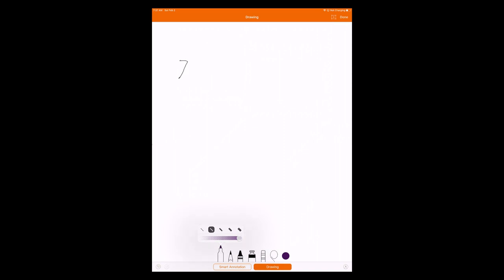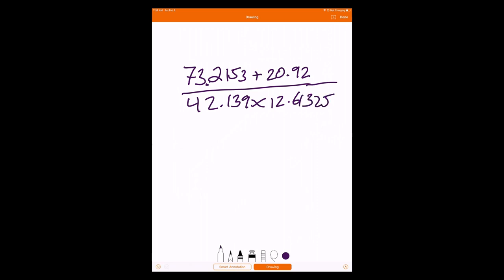The first question I had was about significant figures. It involves a question on the quiz. I'm not going to do the exact question on the quiz, but I'll do one a lot like it. Imagine you had something like this: 73.2153 + 20.92 divided by 42.139 × 12.61325.